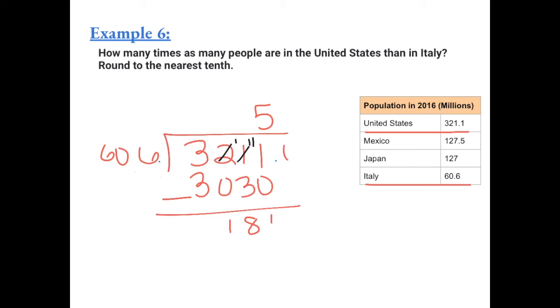Now we're going to add a 0 and bring it down. We have to see how many times 606 goes into 1810. 606 goes into this 2 times, which equals 1,212. We're going to borrow again, so we're going to have 10, 0.